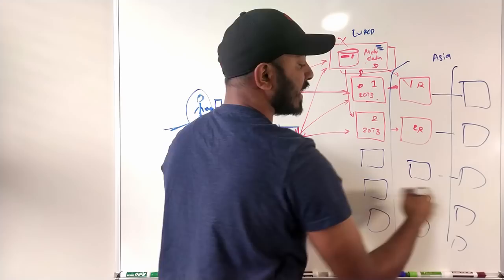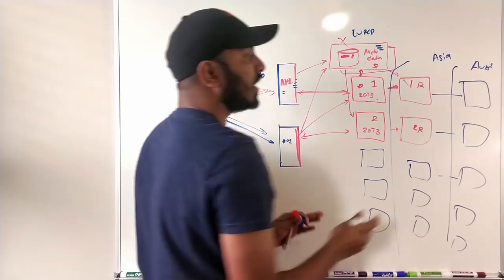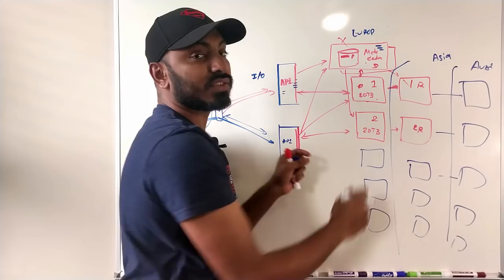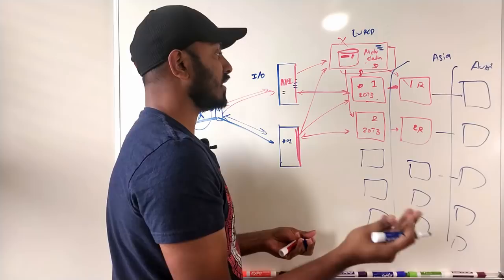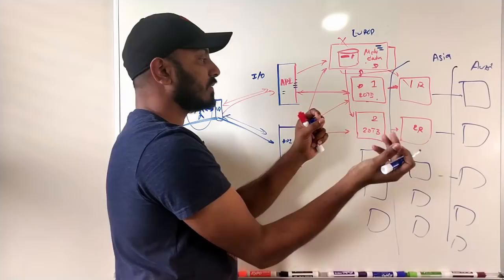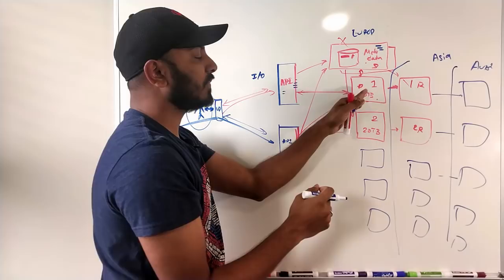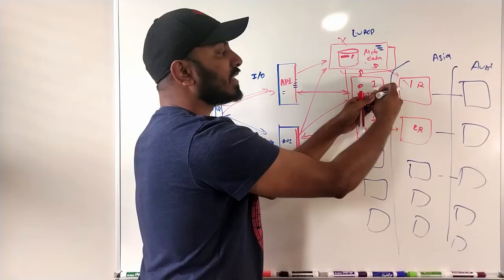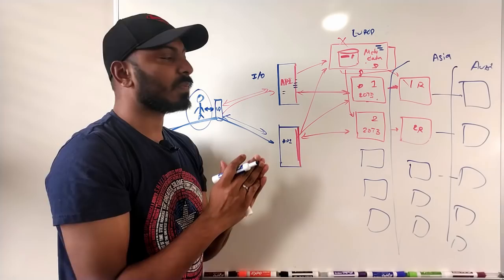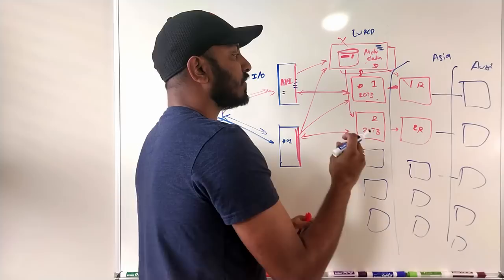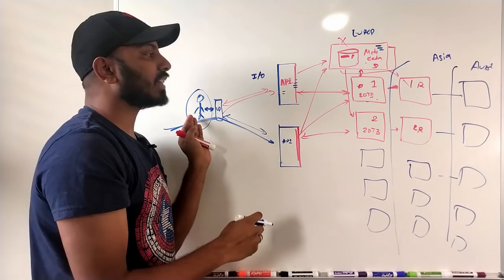We shouldn't keep just two copies — maybe we keep one more copy, perhaps in Australia. Any time we write a file, we replicate to all servers synchronously or asynchronously. If we choose synchronous replication, we won't lose the file. If asynchronous and the server goes down before replication completes, we lose the file and can't achieve 99.999% durability. So for writes, it's better to replicate synchronously — don't tell the client the file is created until it's successfully replicated to all regions.